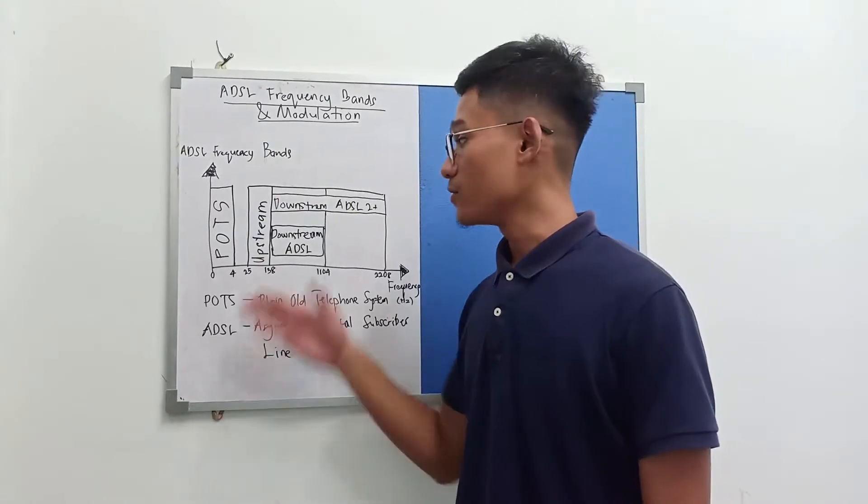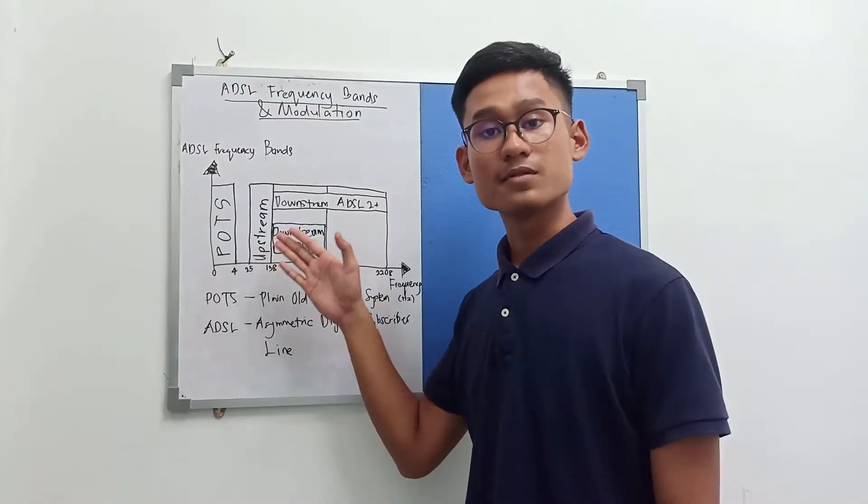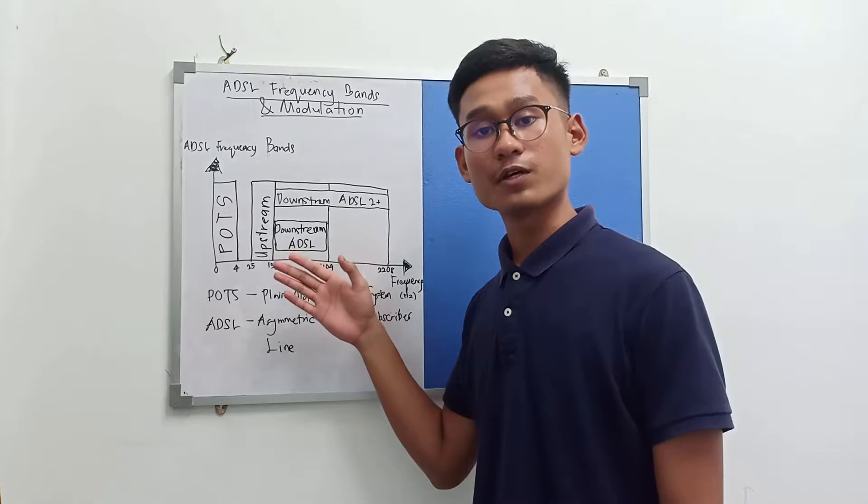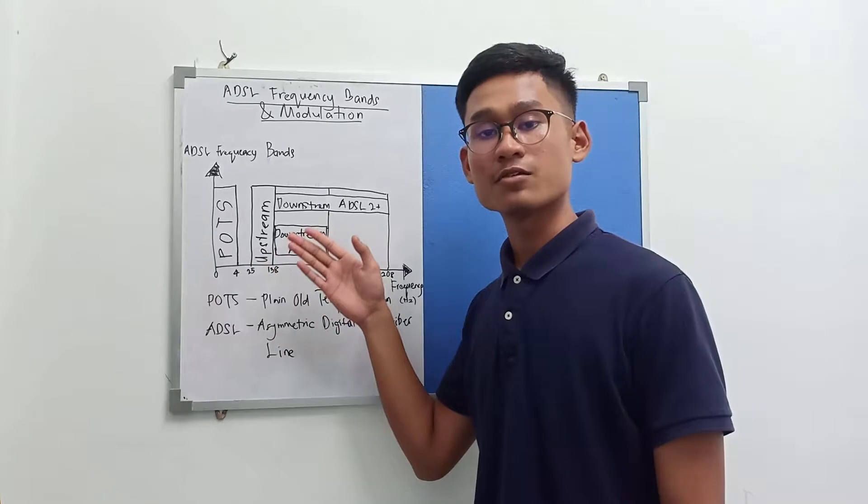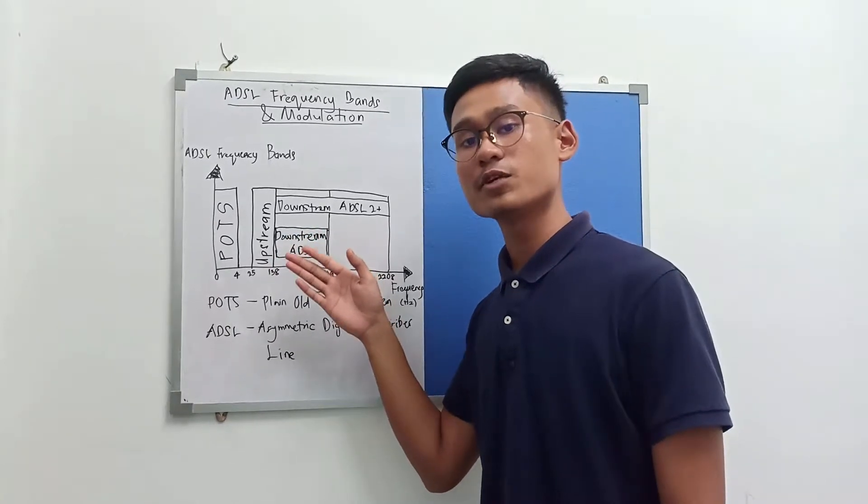The frequency band dedicated for voice on POTS is from 0.3 to 3.4 kHz, but the bandwidth is 3.4 to 4 kHz used as a guard band to avoid interference in modern communication.